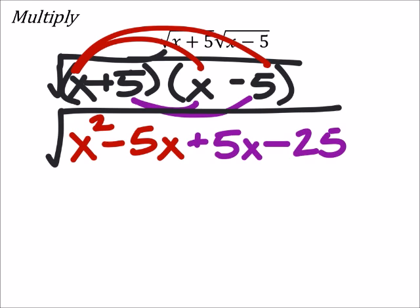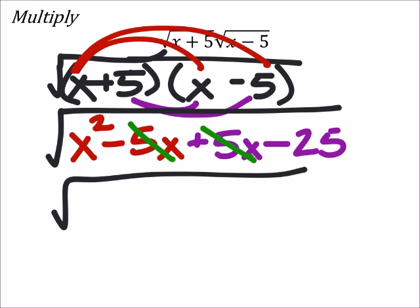So if I wanted to simplify this, here I've got negative 5x which will cancel out this positive 5x. They just become 0. And I end up with the square root of x squared minus 25.